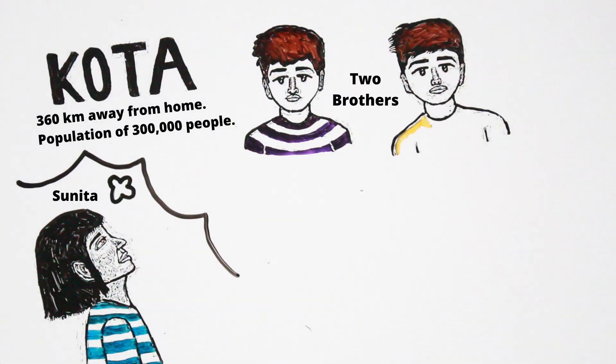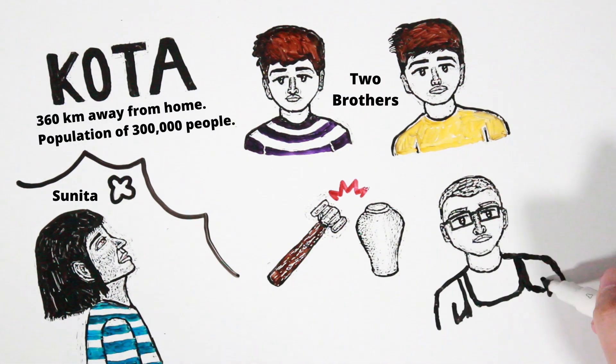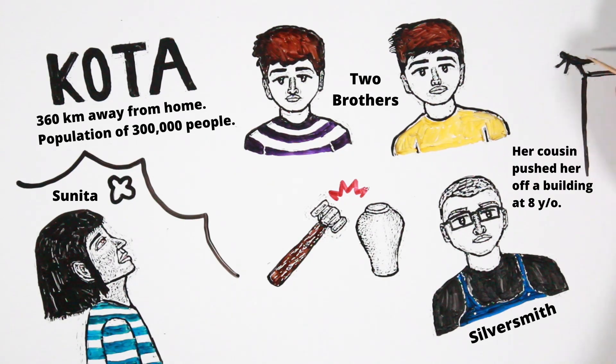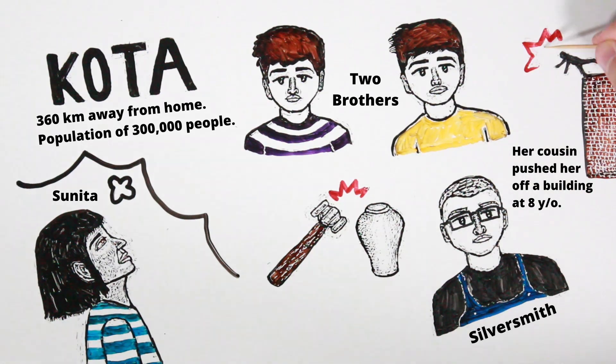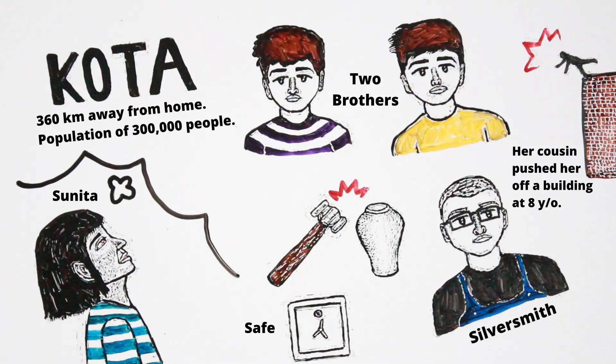Sunita also said she had two brothers. Her family had a silver shop, and when she was eight years old, her cousin pushed her, and she fell from a small height and landed on her head. She said her family owned a safe.